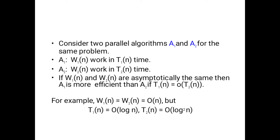For example, W1(n) = W2(n) = O(n), meaning the work complexity is the same. But for time complexity, T1(n) = O(log n) and T2(n) = O(log² n). Here the time complexities are different but the work complexity is the same, so A1 is more efficient than A2.